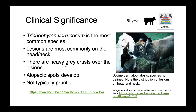In cattle, Trichophyton verrucosum is the most common species, and lesions are most common on the head and neck. You can see on this cow these gray alopecic spots all over the head and neck — very classical clinical signs of ringworm in cattle.